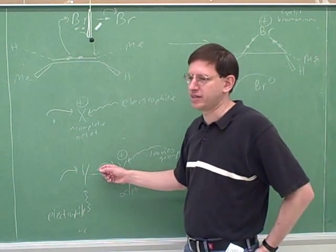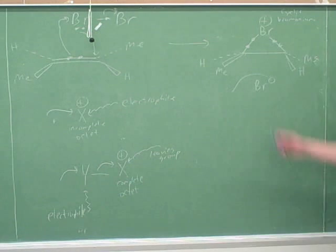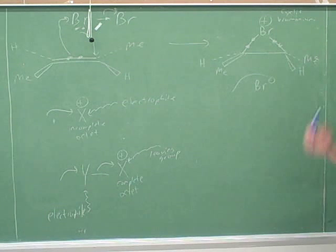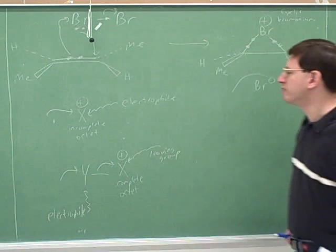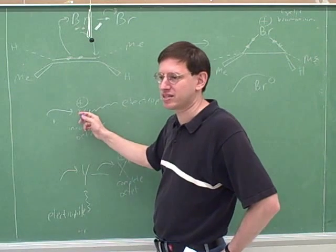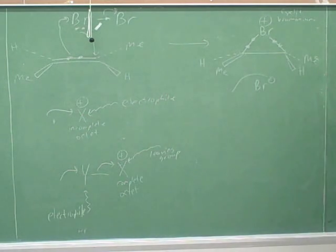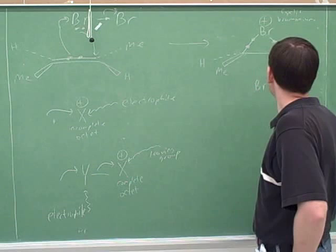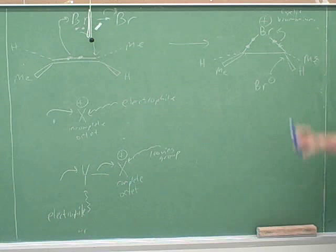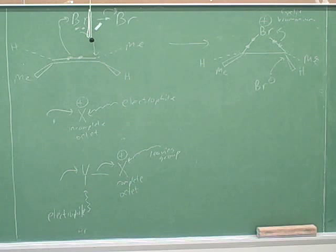The bromine here has a complete octet, so it's a good leaving group, and it's the atom attached to it that's going to be the electrophile. The bromine is clearly not a carbocation. So the Br⁻ is going to attack one of the carbons attached to the bromine — it'll attack a carbon attached to the bromine.